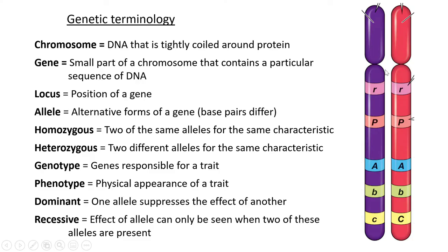Then we have alleles - these are variations of a gene. On one chromosome we have a variation of a gene and on the other a similar or different variation. If both chromosomes have small r's, those are the same alleles. But looking at gene C at the bottom, we have a small c and a capital C - it's still gene C, but the small c and capital C represent a small DNA difference between the two, perhaps a mutation or a base pair difference. These are two different alleles for the same gene.